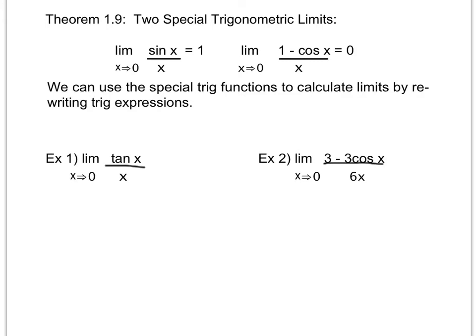I know that tangent is the same thing as sine over cosine, and dividing by x is the same as multiplying by one over x. So I can write this as the limit as x approaches zero of one over x times sine of x over cosine of x. Rearranging, I get the limit as x approaches zero of one over cosine of x times sine of x over x.